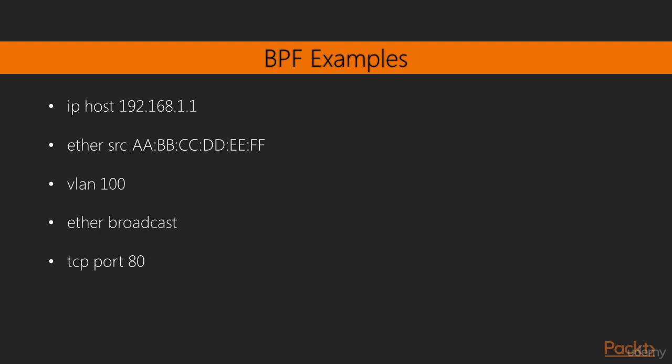The first example is: ip host 192.168.1.1. So IP is the protocol, host is the type, and the ID is the IP address. That will filter traffic for that IP address, whether it's the source or destination — the host keyword handles both. Next, Ethernet source and a fictitious MAC address: Ethernet is the protocol, source is the direction, and the MAC address is what we're looking for. If you're capturing traffic with multiple VLANs, such as spanning a trunk port on a switch, you can specify the VLAN or VLANs. The next example is ether broadcast, using the special keyword broadcast to filter all layer-2 broadcast traffic. And the last example is tcp port 80 — filtering for HTTP traffic, looking for only port 80 of any source or destination.